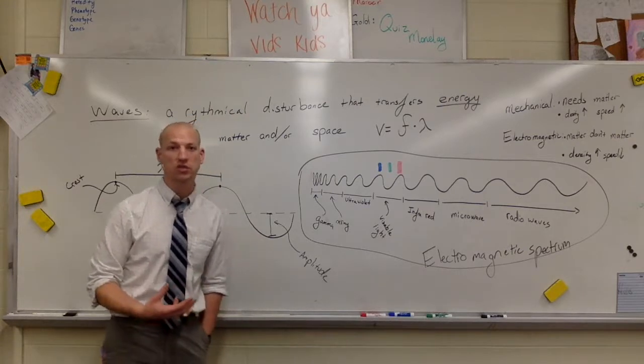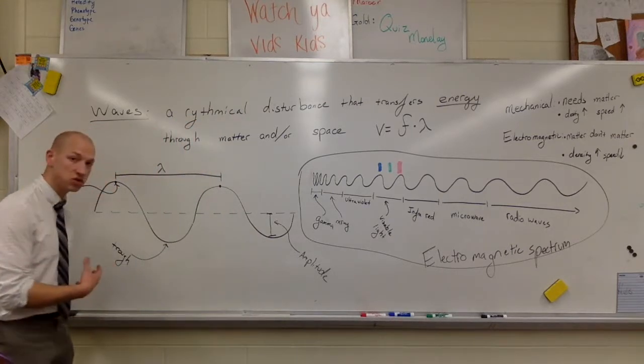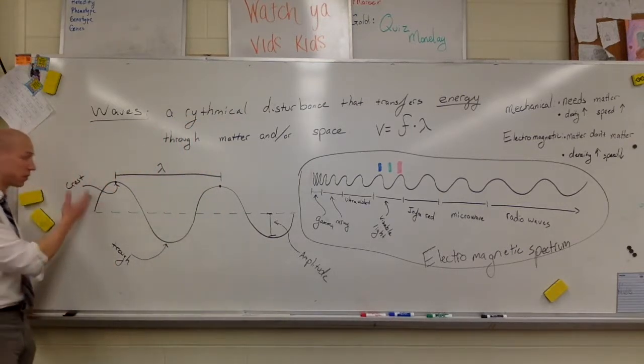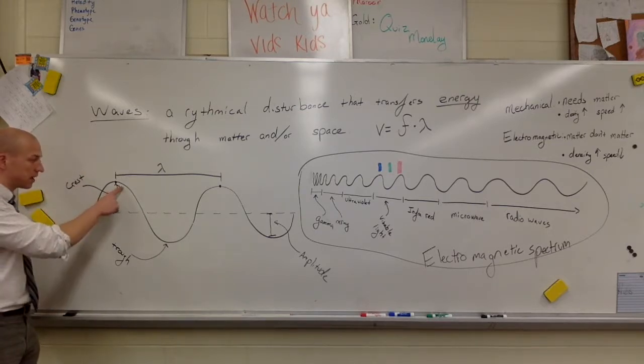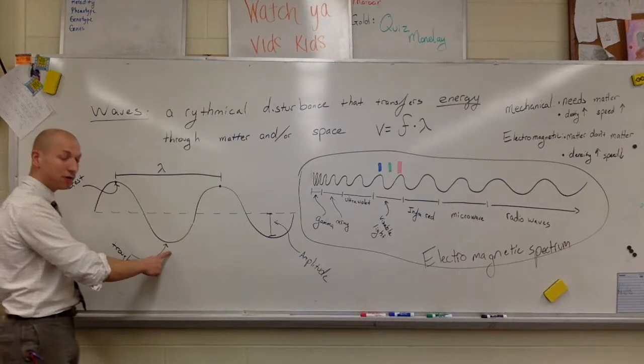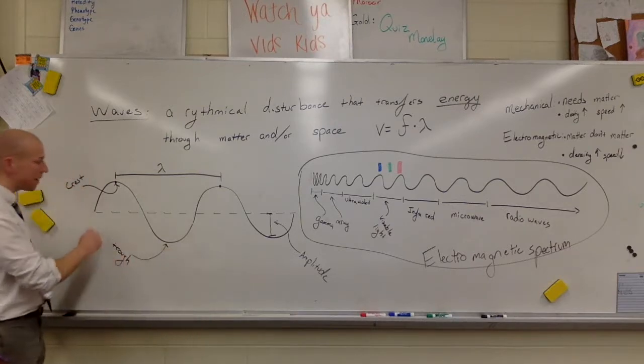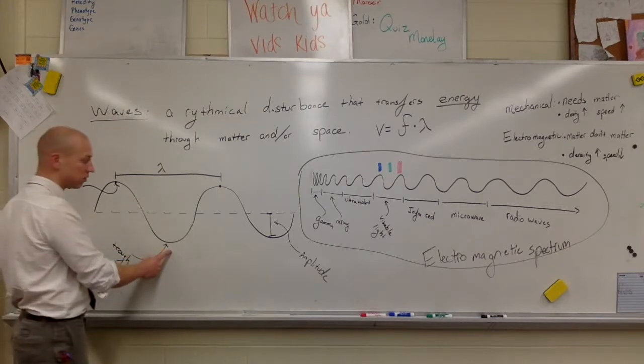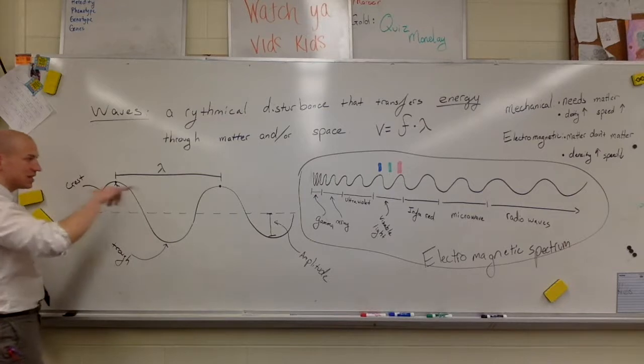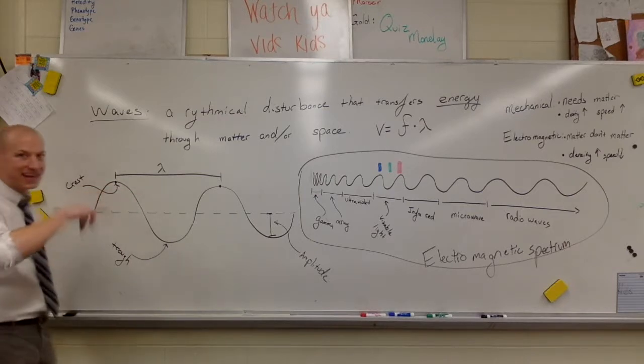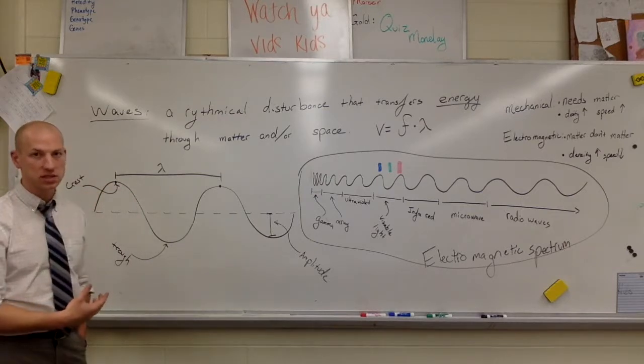The first couple of things that you need to know are: the crest of the wave is the highest energy that we have, the highest point of the wave. The trough is the lowest point. So if you imagine that this is an ocean wave, this is the highest point of the wave, this is the lowest point of the wave.